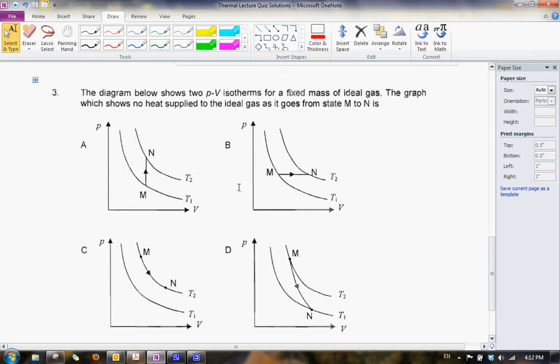The graph which shows no heat supplied, so this is the key word, no heat supplied to the ideal gas, and it goes from state M to N is which graph?